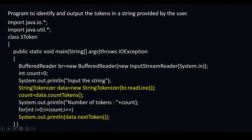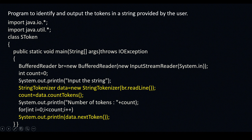You can see: import java.io.* and also import java.util.* — because StringTokenizer comes under the util package, you need to include the util package, and obviously you should include the io package as well because you are going to use BufferedReader. The class name is SToken, and then you have public static void main(String args[]) throws IOException. Inside this you have: BufferedReader br = new BufferedReader(new InputStreamReader(System.in)). System.in is nothing but the keyboard.